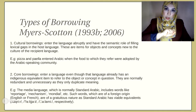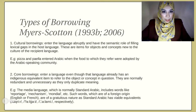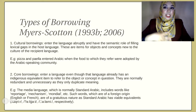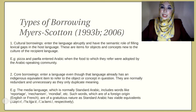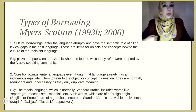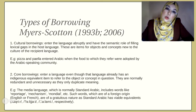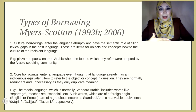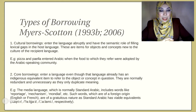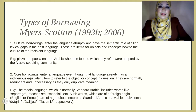Pizza entered Arabic when the food to which it refers was adopted by the Arabic-speaking community. So the concept of this object — a round bread with tomato and other spices and ingredients — was new to the Arabic-speaking culture. It did not exist in their lexicon and it did not exist in their vocabulary. That's why it's called cultural borrowing: the item or the concept does not exist in our culture, there is a lexical gap, and as a result we borrow a lexical item from a foreign language to fill in that gap.